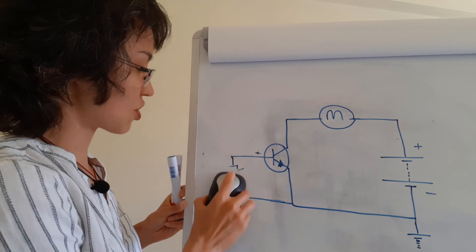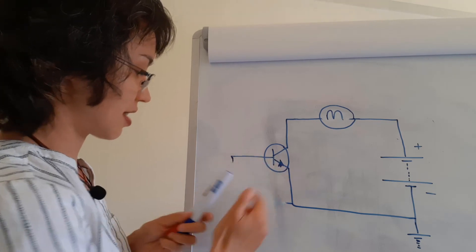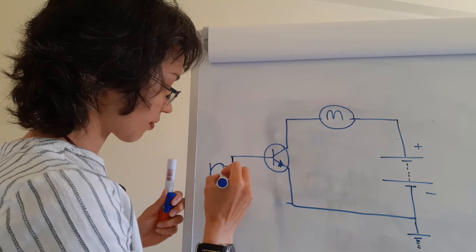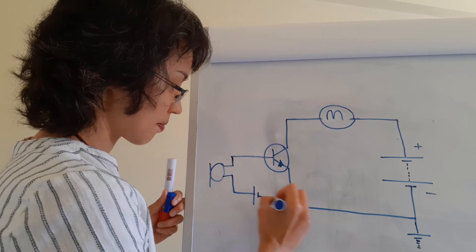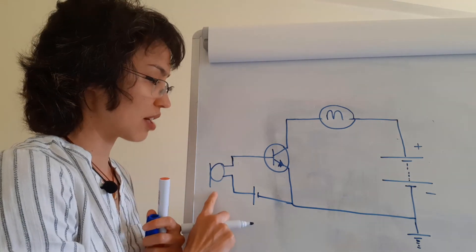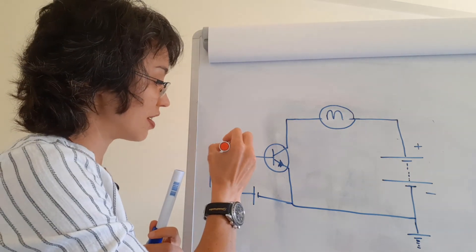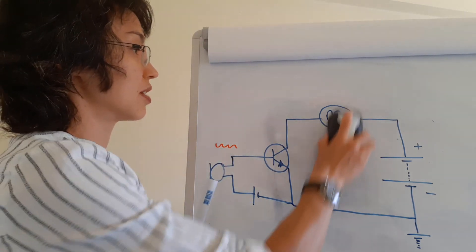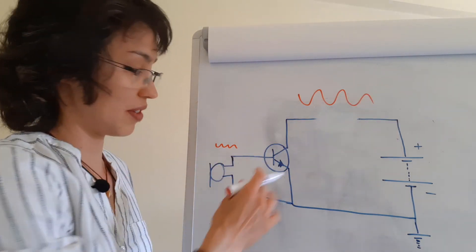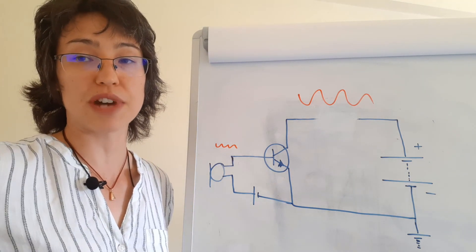As a switch that's one application, but you could also have the situation where you connect this to something like a microphone. You have a very small voltage supply and the microphone's signal varies at the base, while on the other side you have a loudspeaker. The signal on the other side would be an amplified version of the input. Those are just a few different examples of how these things can be used in practice.